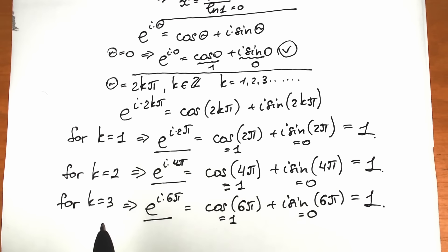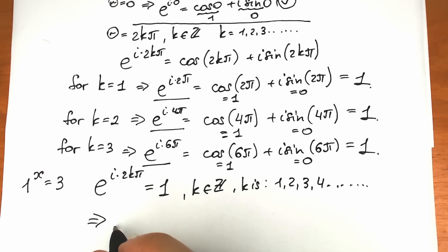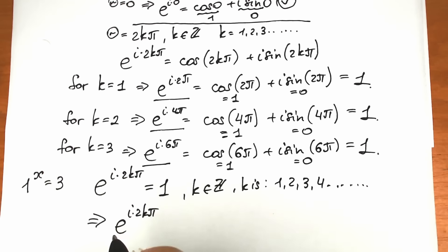Since e to the power i times 2k pi equals 1 for integer k, we can go back to our original equation 1 to the x equals 3, and substitute this expression for 1. So we write: e to the power i times 2k pi, raised to the power x, equals 3, where k equals 1, 2, 3, 4.